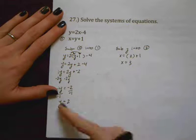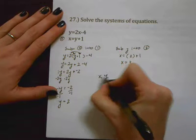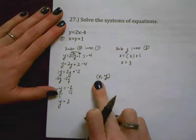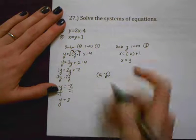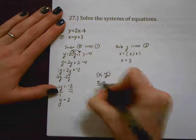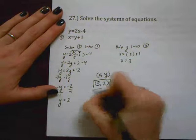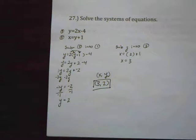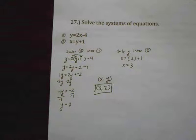So the last thing I need to do is write these solutions as an ordered pair remembering that ordered pairs are always our x-coordinate and then our y-coordinate. So this would be 3, 2. There's my answer and you just solved by substitution.